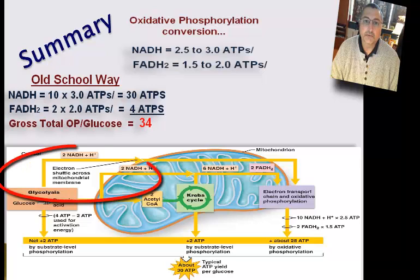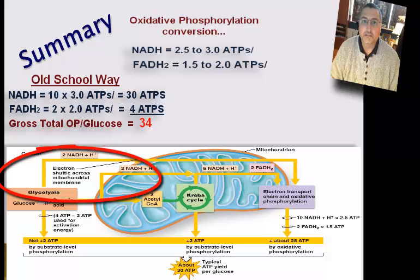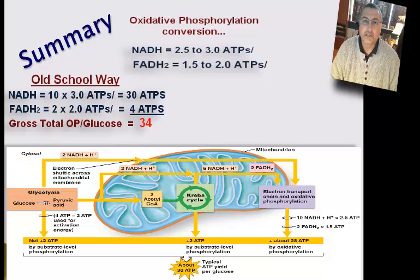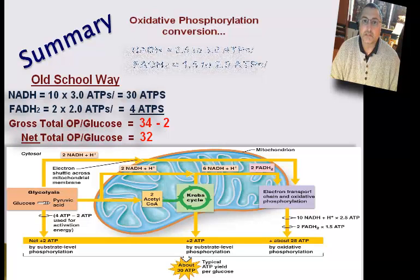Two of those NADHs were produced in the cytoplasm during glycolysis. We have to actively transport those NADH molecules into the mitochondria so they can get to the electron transport chain. This active transport requires energy in the form of ATP, equivalent to about 1 ATP per NADH. So we have to use two of those ATPs produced in oxidative phosphorylation to prime the process, giving us a net gain of 32 ATPs.